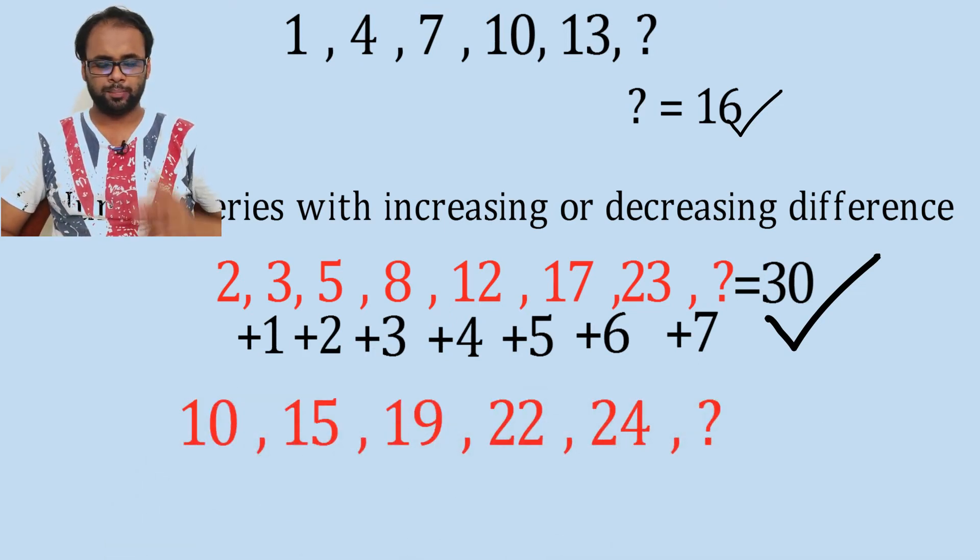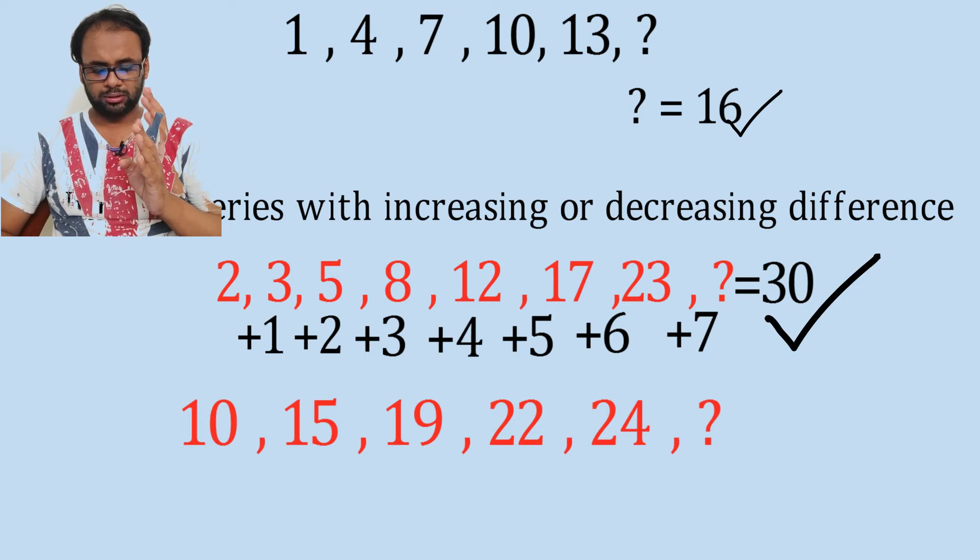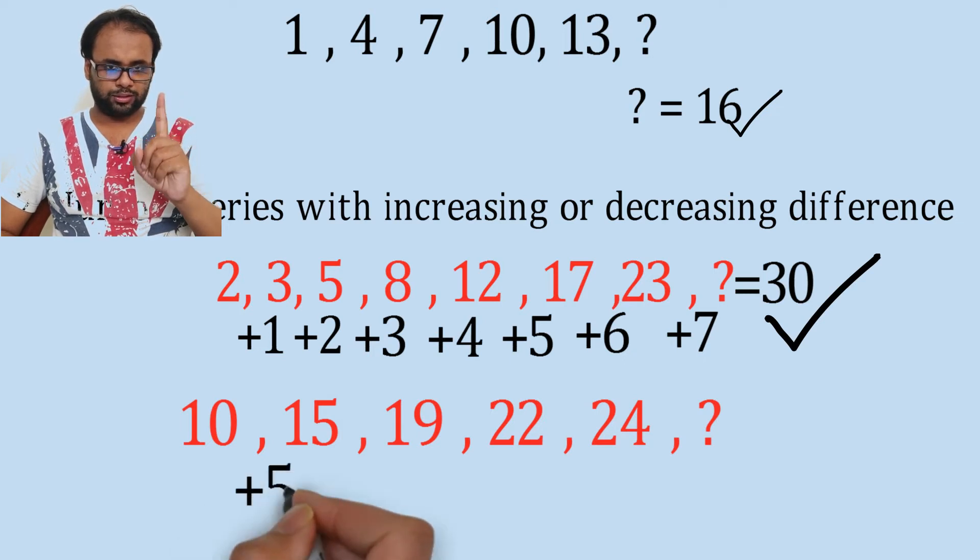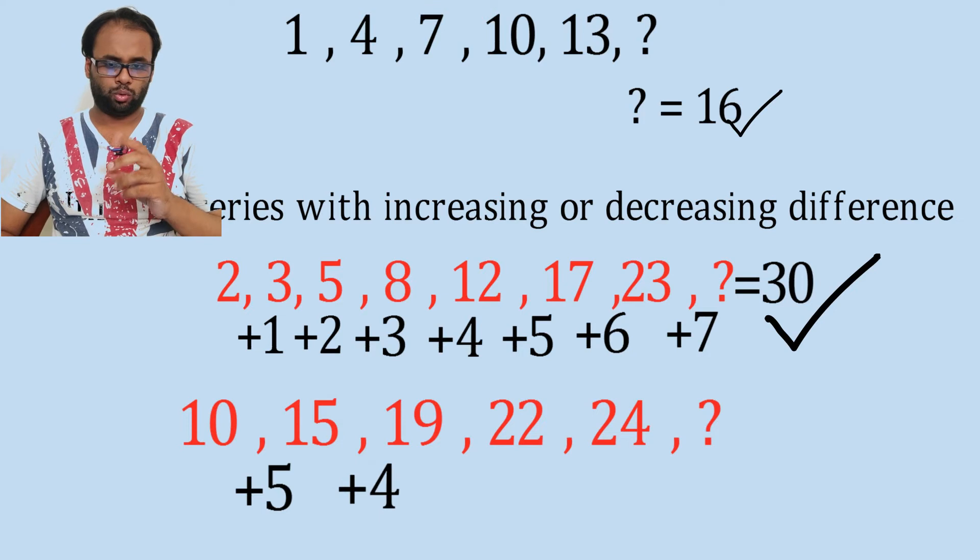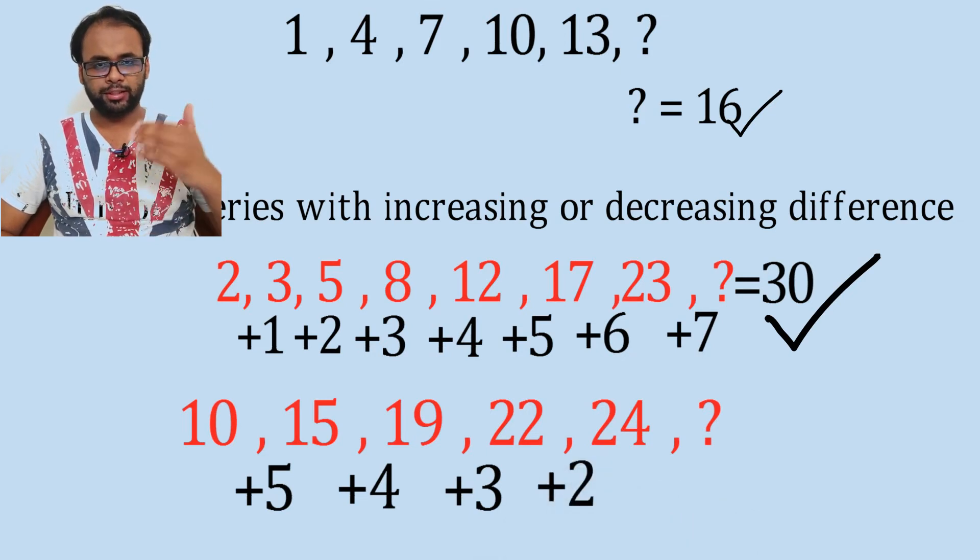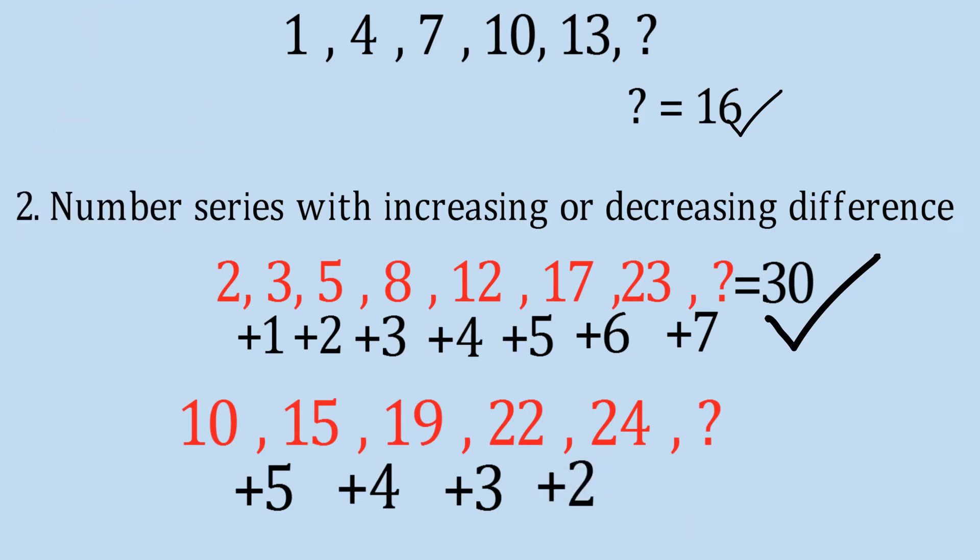Next series we see 10, 15, 19, 22, 24. Now if you see, the first difference is plus 5, the second difference is plus 4, the third difference is plus 3, the next difference is plus 2. So this is a case of decreasing difference, so we see the next number will be 25.